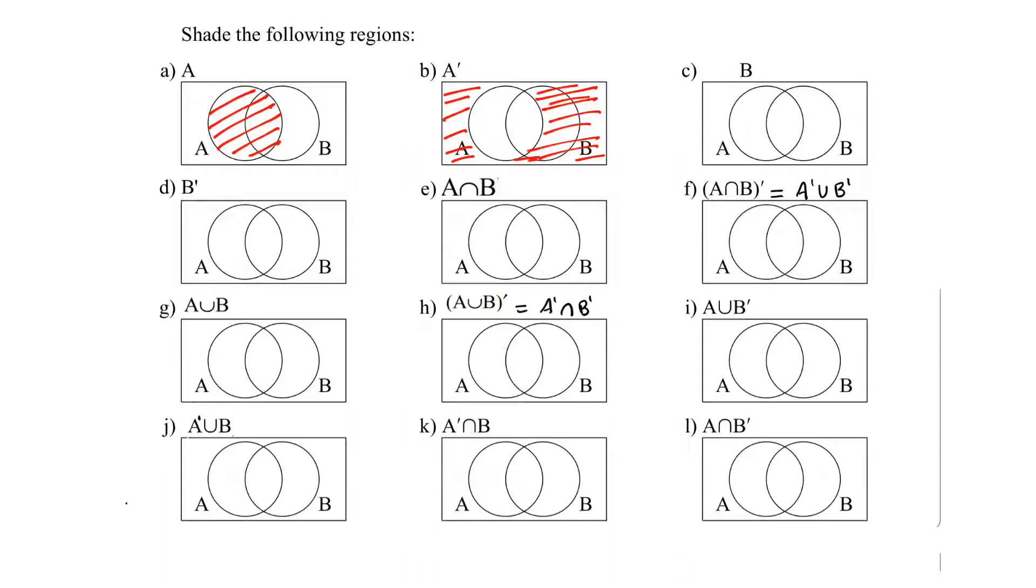And here they want us to shade B. So this circle is B and it represents elements in B which are here. We shaded B.